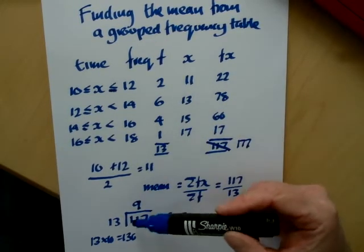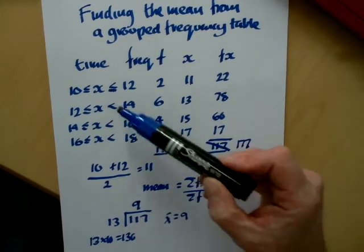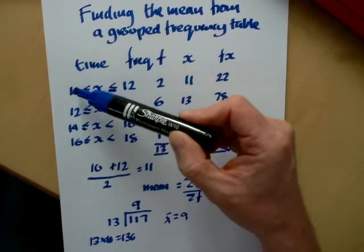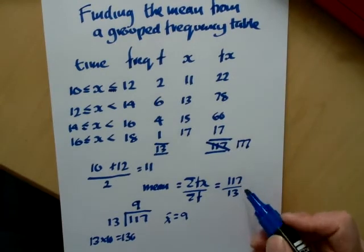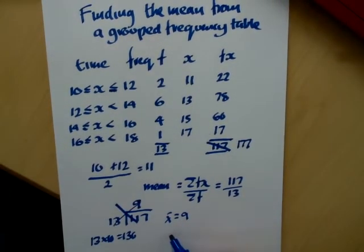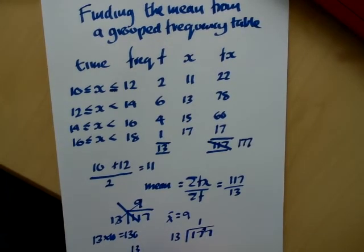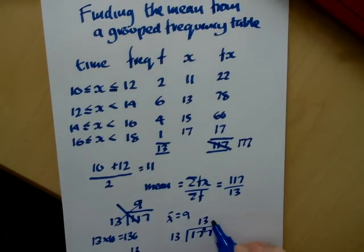I picked the mistake up by seeing that the answer I got was an impossibility. The mean will be somewhere in the middle of the data, and the data was between 10 seconds and 18 seconds. So now I've corrected it, I've got to do 13 into 177. So 13 doesn't go into 1, it goes into 17 once with a 4 over. So 13 into 47. Well, 13 threes are 39, so it goes into 13 times with remainder 6, 13 remainder 6. So my answer then is 13 and 6 thirteenths of a second.